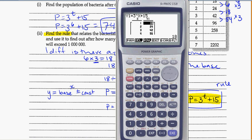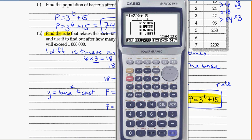Show the table and scroll down, looking for when the population exceeds 1 million. Pay attention — if you see a little 'e' in the number, that's scientific notation, not a plain digit. For example, 4.78 times 10 to the sixth is 4,782,984. Scrolling back, at 12 hours we have 531,000, and at 13 hours we're over 1 million.